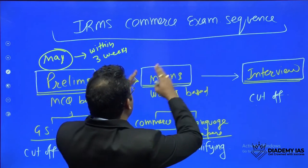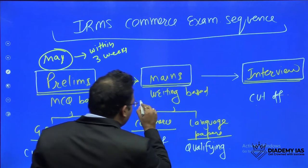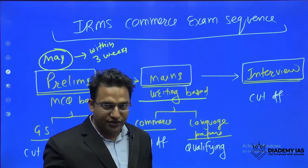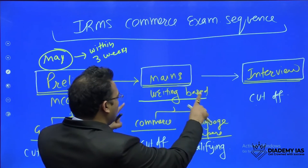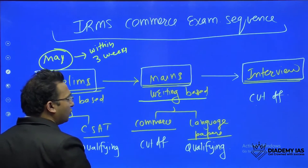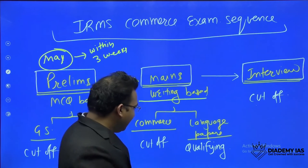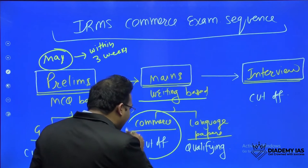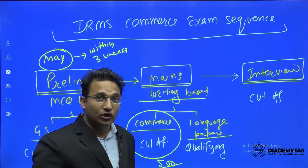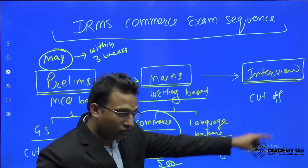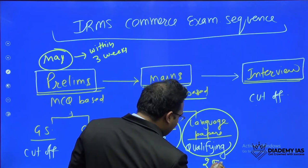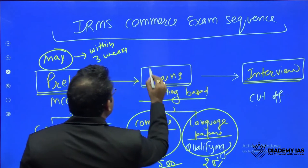The second stage after qualifying the prelims is the mains examination. This mains examination is writing-based — you need to write traditional answers. There are two papers: one is the Commerce Optional and the second is the Language Paper. If you are from an engineering background, you can go for the engineering optional also. The Commerce Optional is the deciding factor, as out of 500 marks, whoever gets the maximum marks will be eligible for the interview. The language papers are qualifying in nature — you just need to score 25% out of 300 marks.